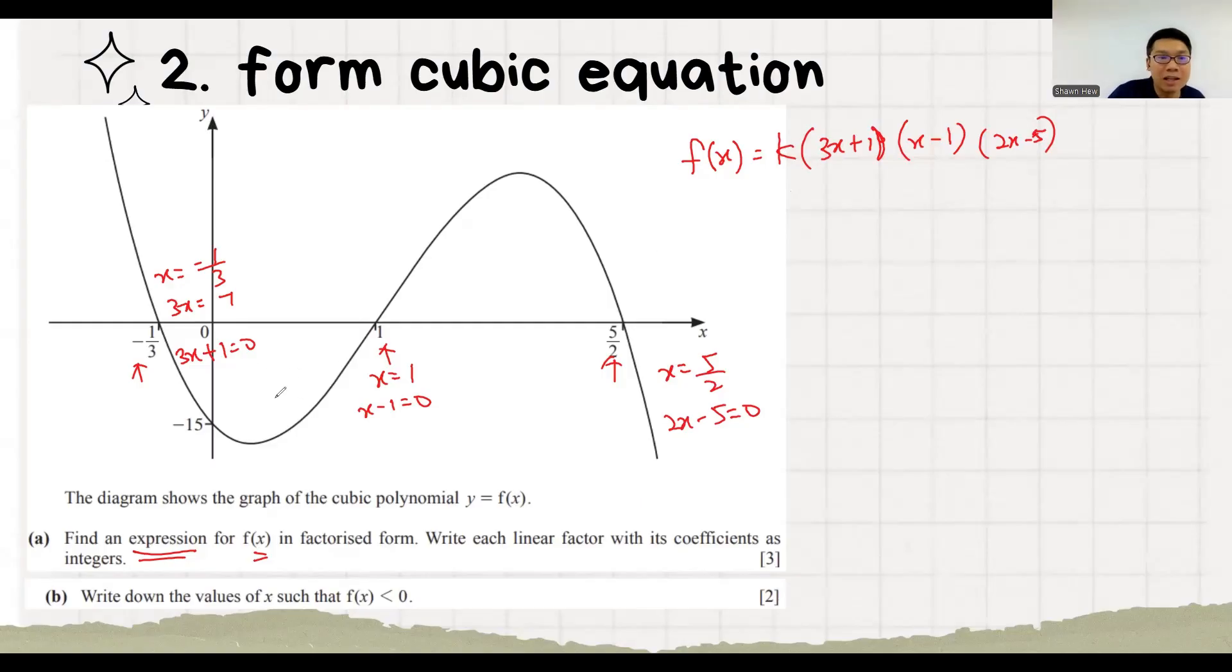And then how to find the value of k? We need to use y intersection point to do this. So we know it is 0 minus 15. We sub into this equation. I just write this because this times 0 is nothing. This times 0 is nothing. This times 0 is also nothing. So like this, you can do it faster. So k is minus 3.